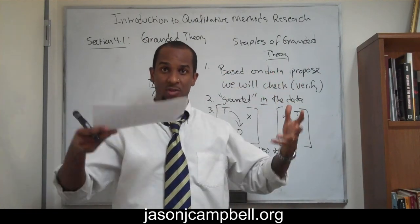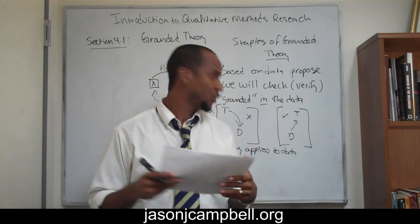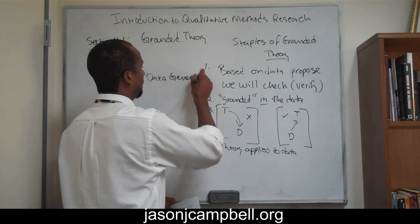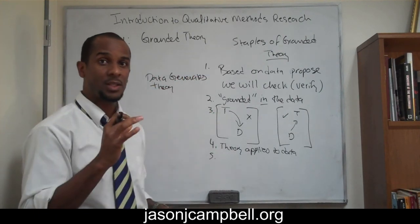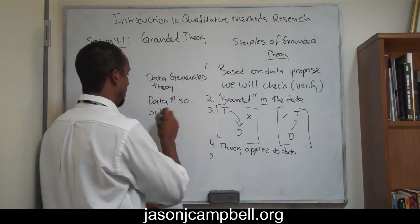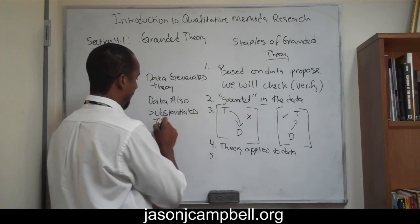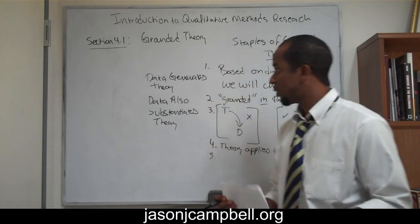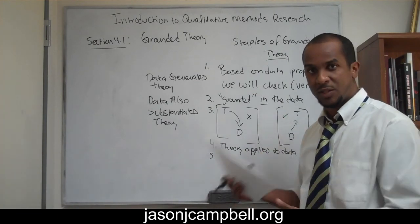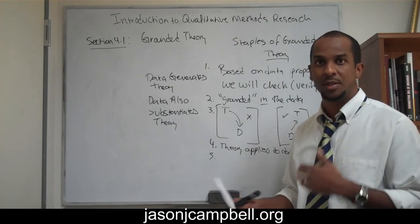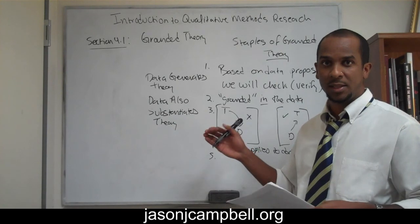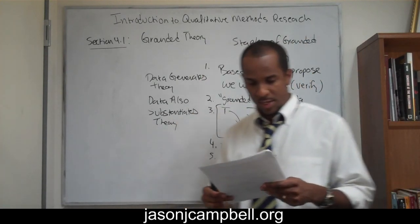You generate the theory — the theory is created, the theory is discovered. So there are two halves: the data generates the theory, but the data also substantiates the theory. Later I'll talk about some of the problems this has — if it's not done properly, this can become begging the question or circular arguments. You have to make sure you're not creating straw man arguments in your research. But typically speaking, this is what the process and method of grounded theory looks like.